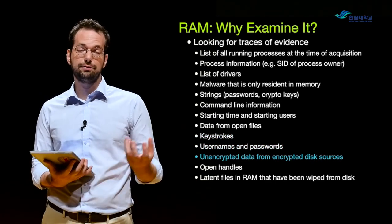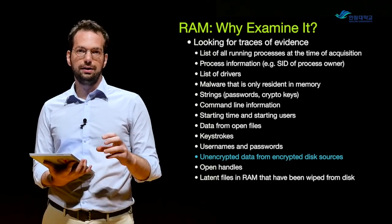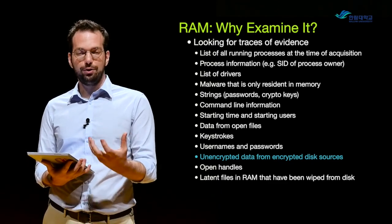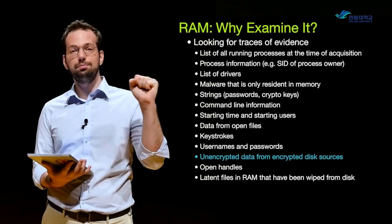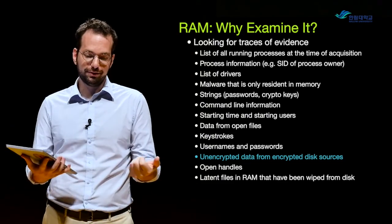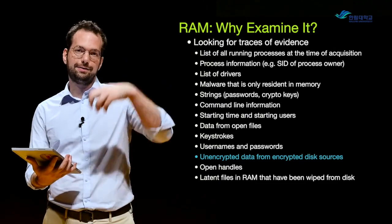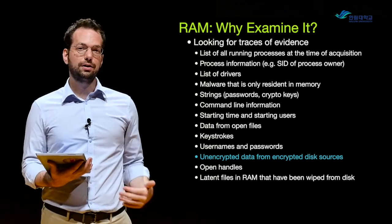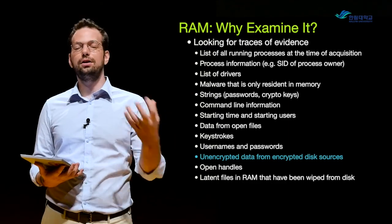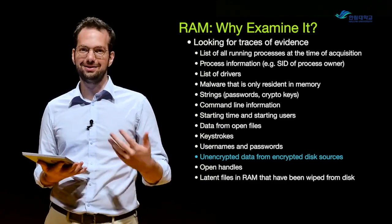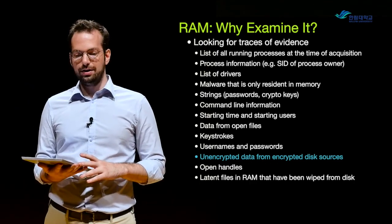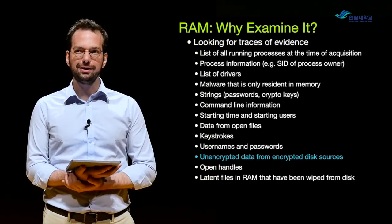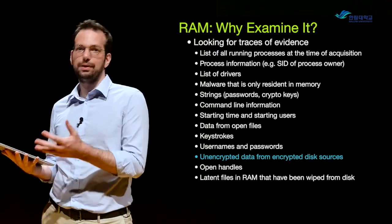If our hard drive is encrypted or we have an encrypted file and the suspect or victim opened up that file, whenever they open that file the encrypted disk that we can't normally get access to — all of the data is unencrypted in memory and that's how they access it. If I open up something like a zip file, all of the files inside have to be put into memory so I can access them. So everything I open up that might be encrypted on the hard drive, we can potentially recover from RAM in its unencrypted form — but only if we can recover RAM and they haven't shut down the computer.